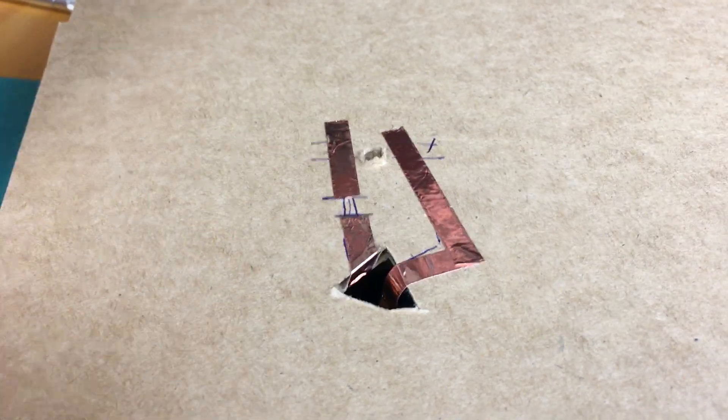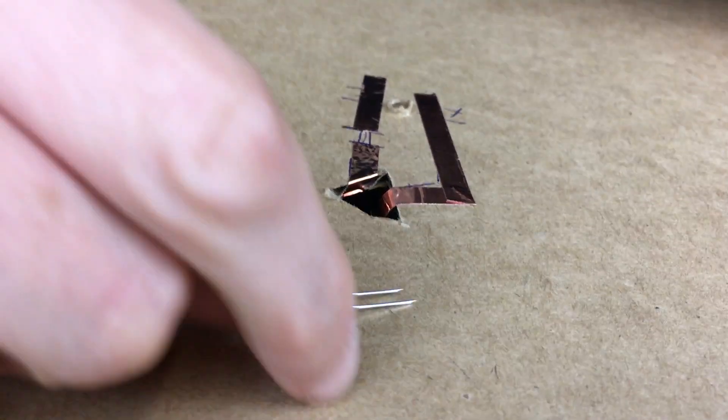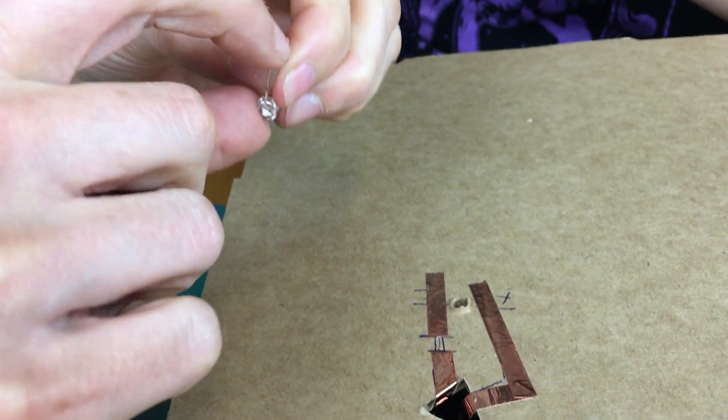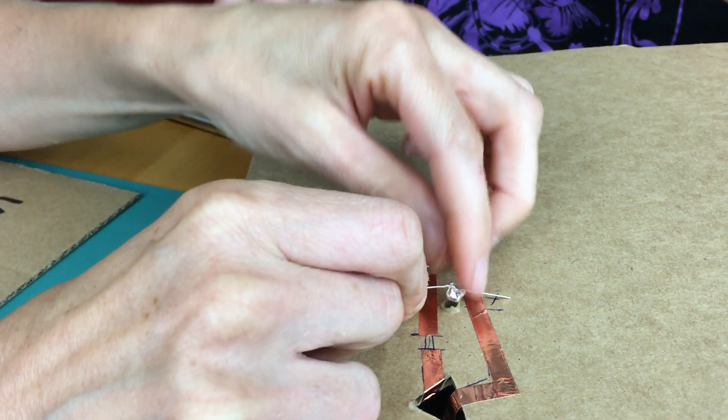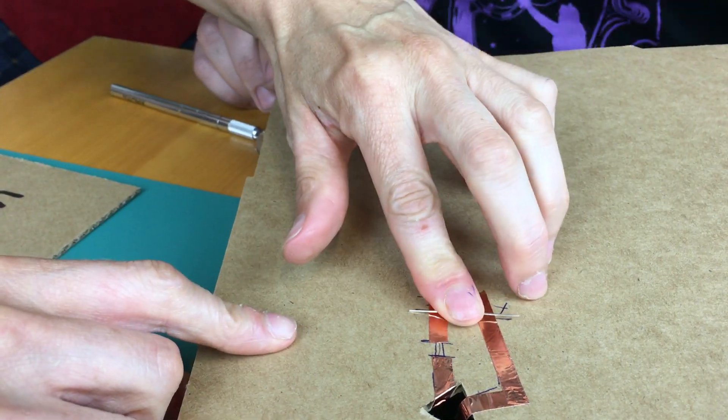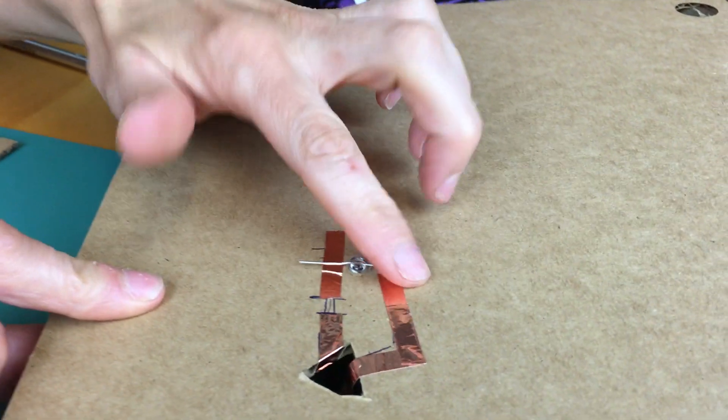Now when we grab our LED, remember we have a positive leg and a negative leg. Our negative leg is short. I'm going to make it do a split, just like that. I've labeled my side so I know which side goes where, and I can just pop it in.